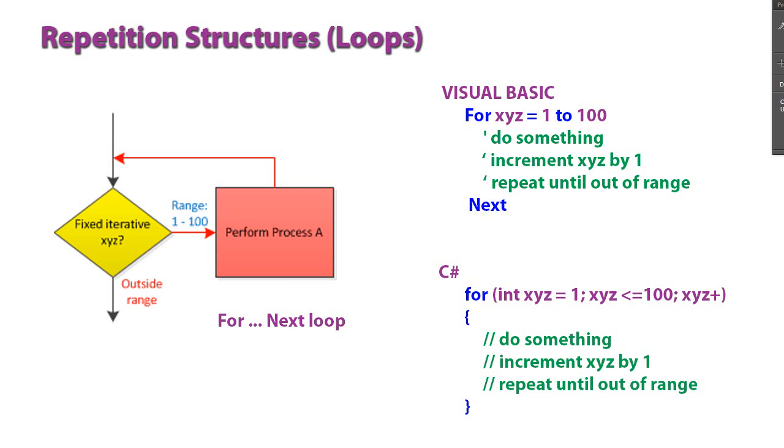And then we have one fixed iterative structure in which the loop executes a certain number of times, and it's looking at a range of values. In that range, there's a counter. In this case, for Visual Basic, we have a for-next loop, and I have a counter that I named xyz. And I wanted this loop to execute 100 times. So I'm starting with the value of 1, and then each time through the loop, xyz would increment, until after it gets past 100, then that loop would no longer repeat.